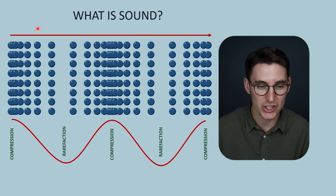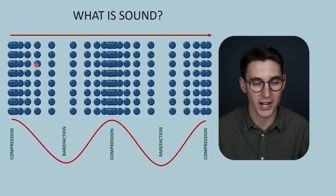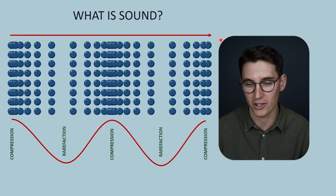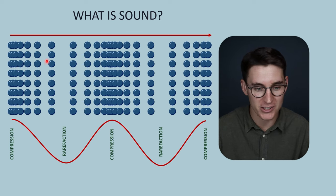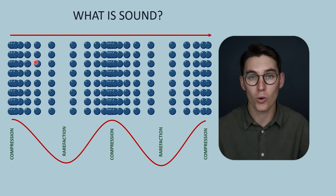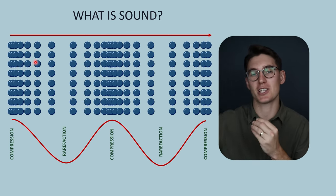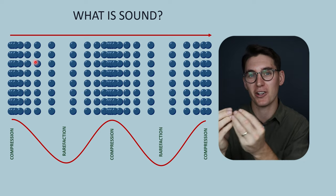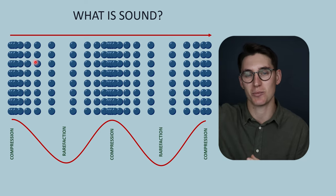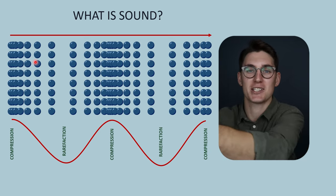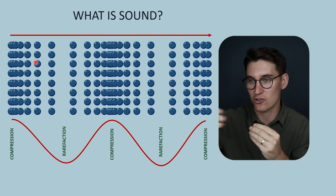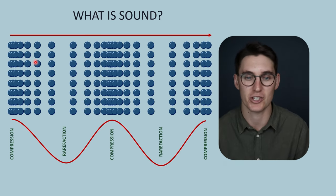The energy is transferring from left to right, but the molecules are not moving all the way across — they stay in the same place, oscillating back and forth. When I'm speaking to someone, the air molecules leaving my mouth are not the same air reaching their eardrum. The energy has passed through. It's not the molecules traveling all the way; it's a transfer of energy.